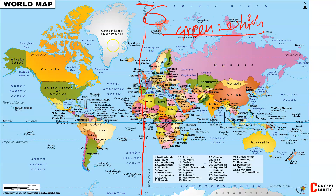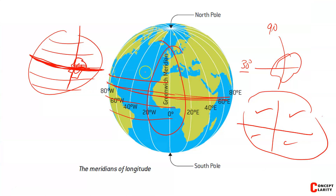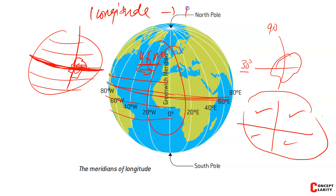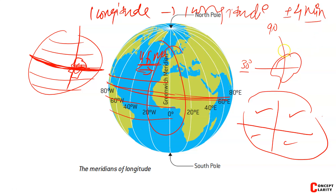When we pass every longitude, we increase by 4 minutes. Or you can say: the time difference between each longitude is 4 minutes. We pass one longitude and jump to the next — so we either subtract or add 4 minutes, depending on which direction you are going: east or west.